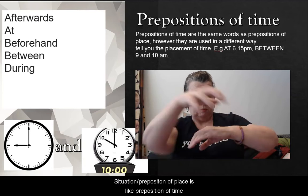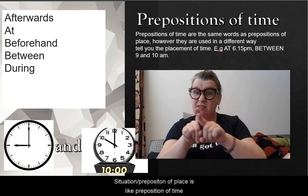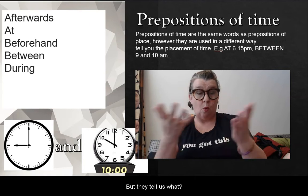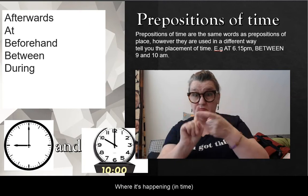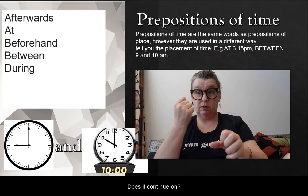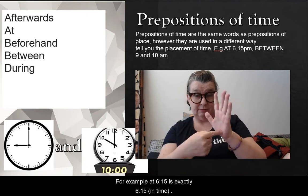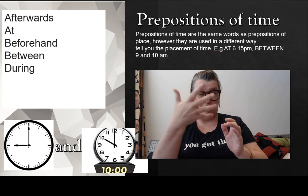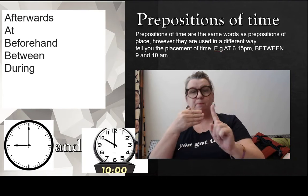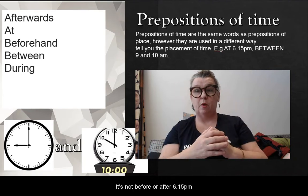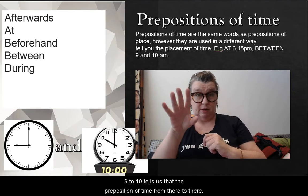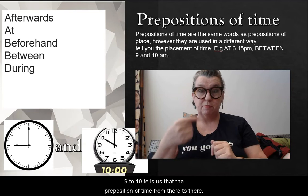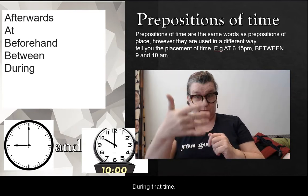Prepositions, or the situation — the context. Prepositions of place are like prepositions of time, but they tell us where it's happening. For example, 'at 6:15' means exactly at 6:15 — not before, not after. '9 to 10' tells us that the preposition of time goes from there to there — it is during that time.